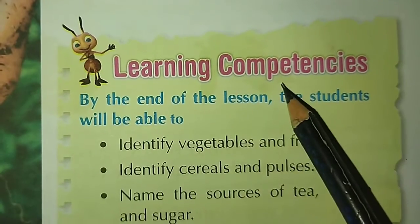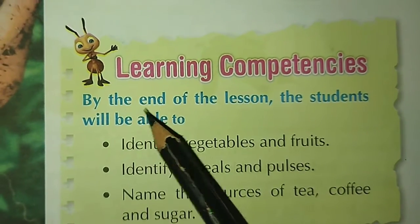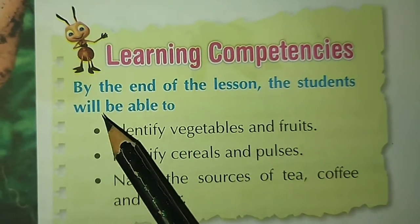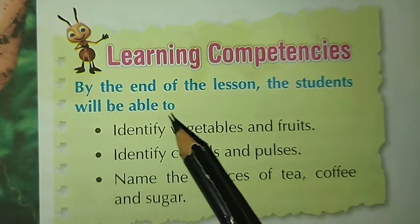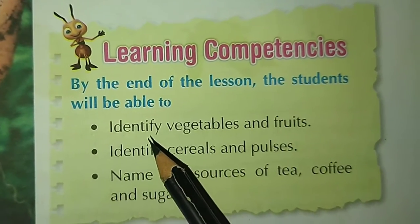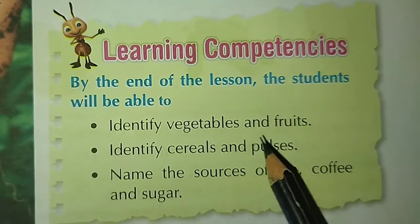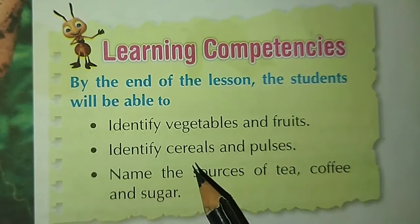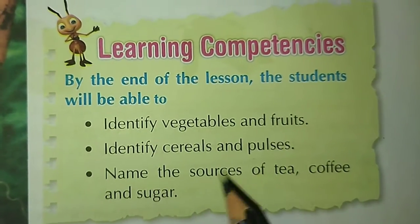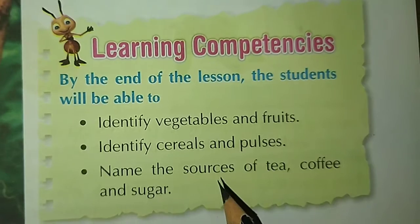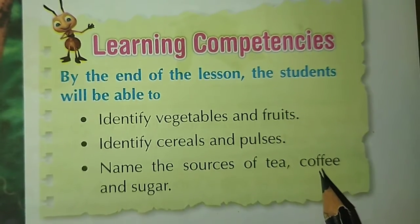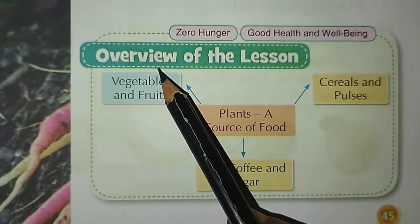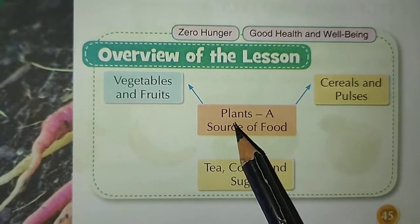Learning competencies. By the end of the lesson, the students will be able to identify vegetables and fruits, identify cereals and pulses, and name the source of tea, coffee and sugar.